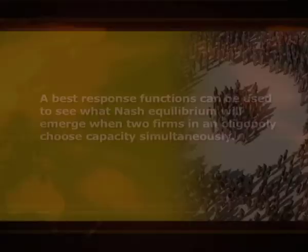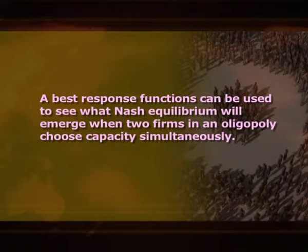An important assumption of the Cournot model is that firms are treated as rational individual decision makers who aim at maximizing their payoffs. In oligopoly models, the payoffs are profits and they depend on each player's choice of move. Each type of move is considered a strategic variable; in the Cournot model, quantity is the strategic variable. Each firm decides on product quantity simultaneously and then the market demand curve determines the price at which output is sold. Best response functions can be used to see what Nash equilibrium will emerge when two firms in an oligopoly choose capacity simultaneously.